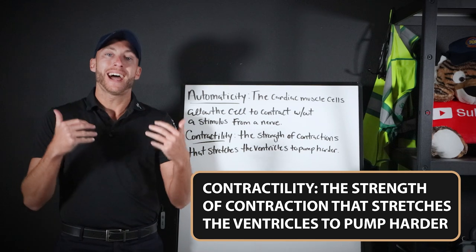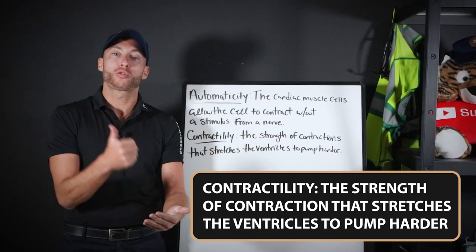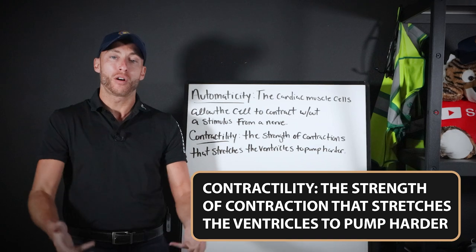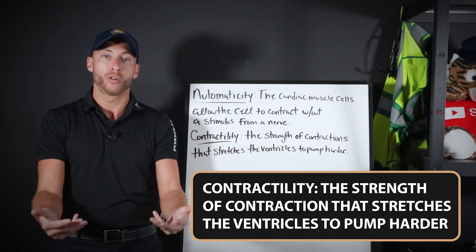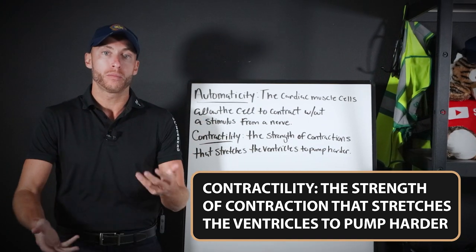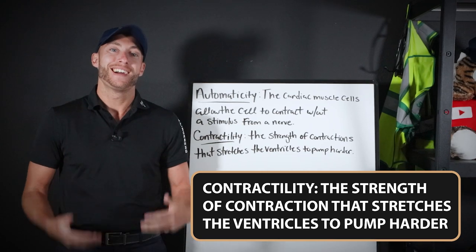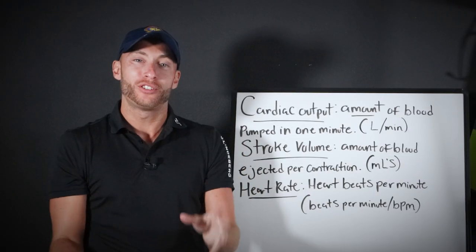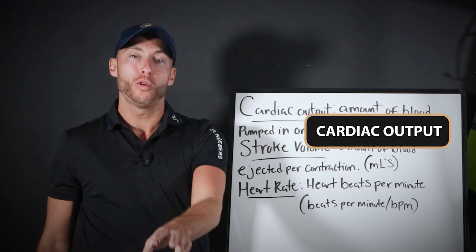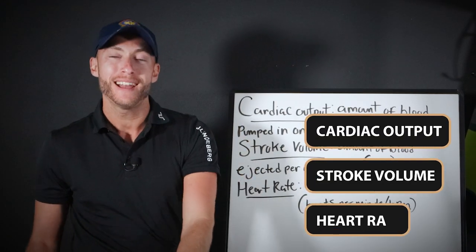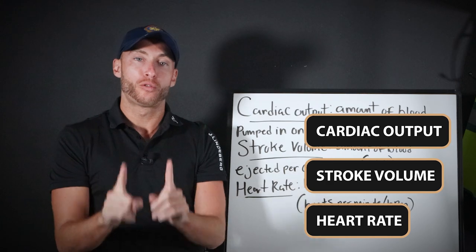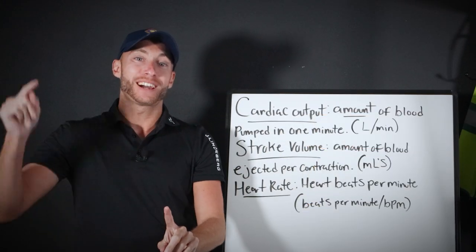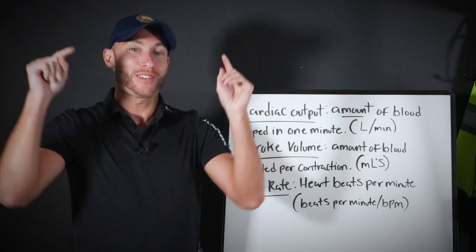Contractility is the strength of the contractions of the heart's ventricles — how hard they pump. That's contractility. You need to know for cardiology: cardiac output, stroke volume, and heart rate. I'm going to break down this equation for you to make it simple. And I have a bonus one for you too.